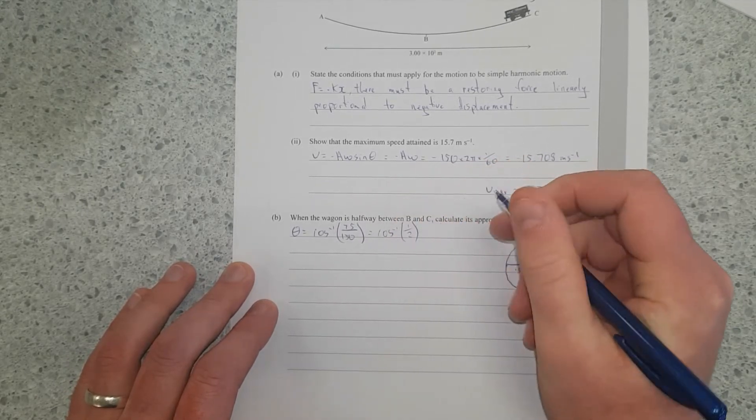From there, find out what the velocity is, and then substitute it into an energy equation. Because at the end of the day, we're going to have to use an energy equation to figure out how much potential energy is left here, which will give us the height. So we'll try and find theta. We have the hypotenuse and the adjacent, so we're going to use cos.